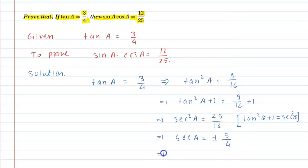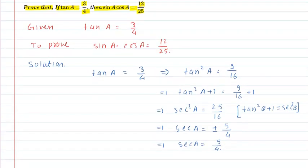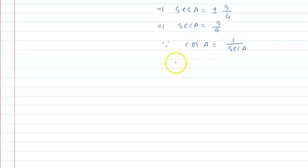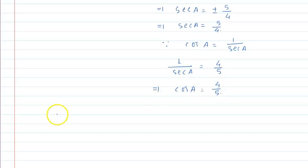So, sec A is equal to 5/4. Now we need the value of cos A. We know that cos A is equal to 1 upon sec A. So taking the inverse, cos A is equal to 4/5.